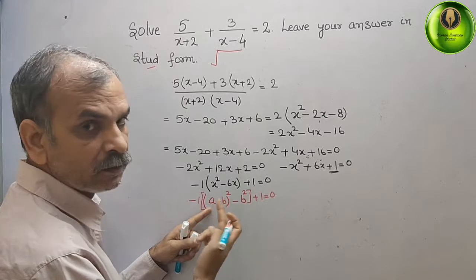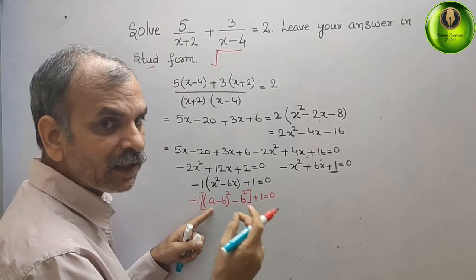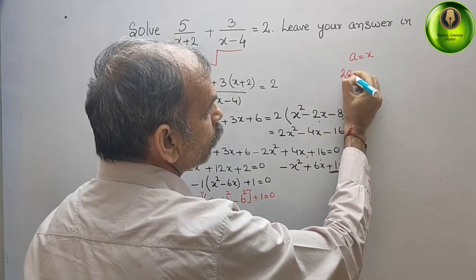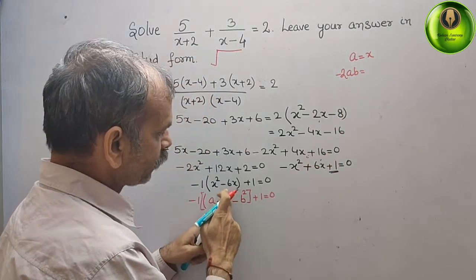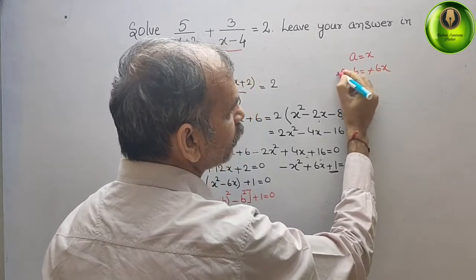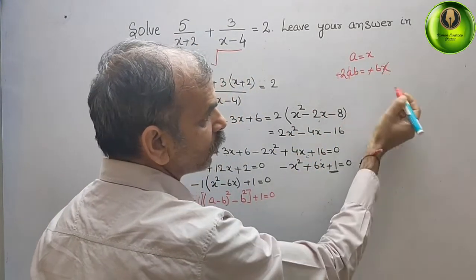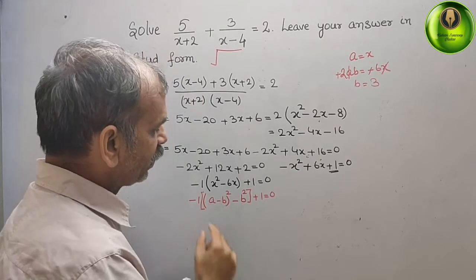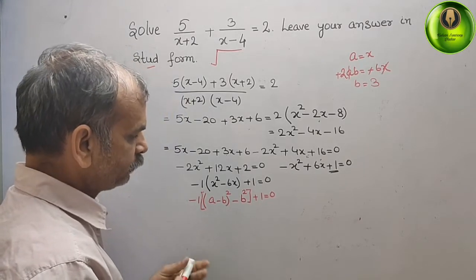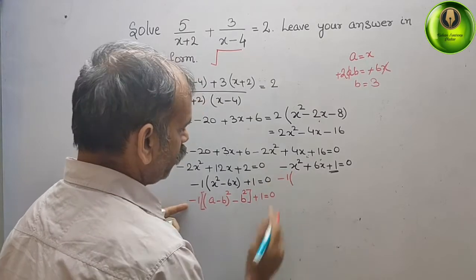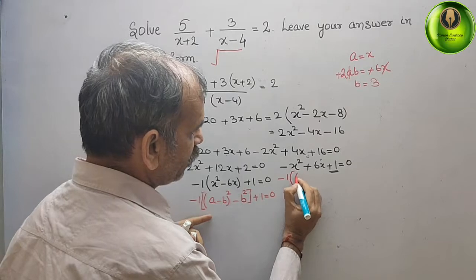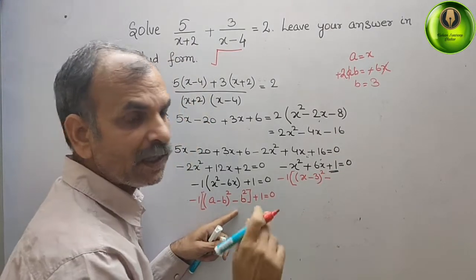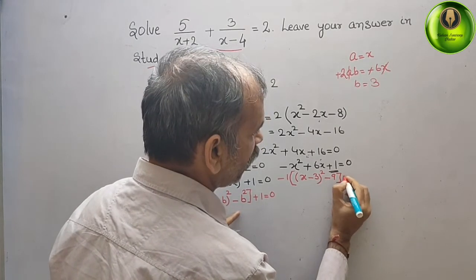Comparing: a² = x², so a = x. For 2ab = 6x, with a = x, we get b = 6/2 = 3. Writing in completed square form: -1·[(x - 3)² - 9] + 1 = 0.